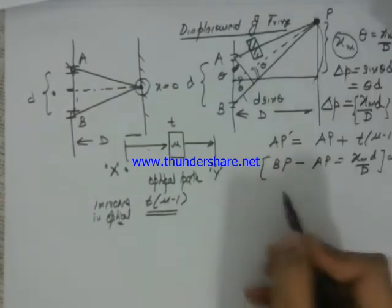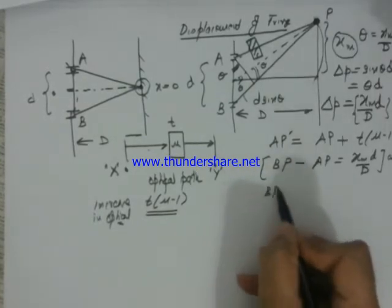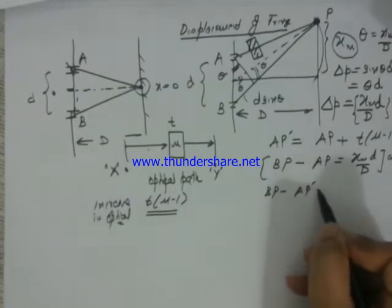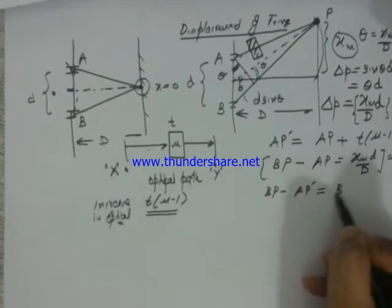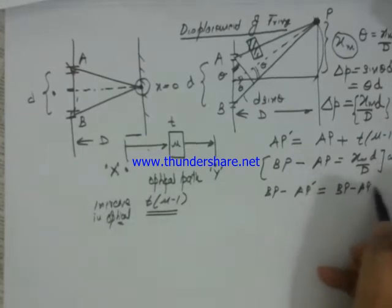This is without slab. The new path difference for the same point becomes BP minus AP dash is equal to BP minus AP minus t into mu minus 1.